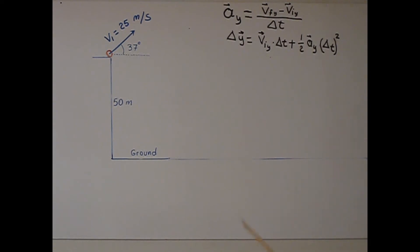I hit a ball from the roof of a building with an initial velocity of 25 meter per second, 37 degree above the horizontal. The roof is 50 meter above the ground.